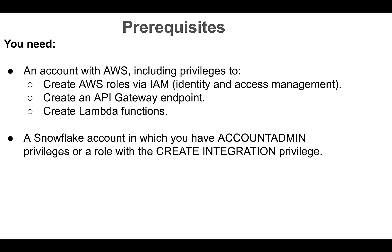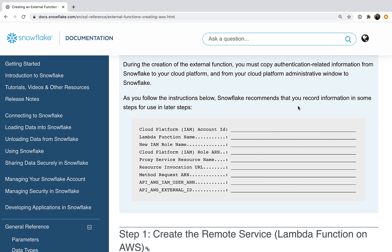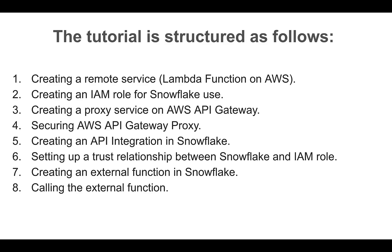In this tutorial, I'll be following a sequence of steps which will take you from creating a remote service, in this case an AWS Lambda, to finally calling the external function from Snowflake. Before we get started, I highly recommend that you use the template provided in the Snowflake docs to record the information in some steps which will be used in later steps. So let's jump right in and get started.